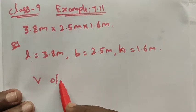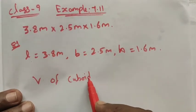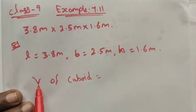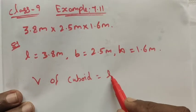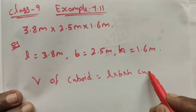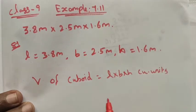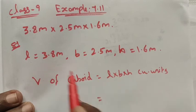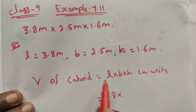We know that the volume of a cuboid, we can simply mention it as V, so volume of cuboid formula is length times breadth times height cubic units. Now we apply that. What is the length? Length is 3.8, and the breadth is 2.5, and then height is 1.6.